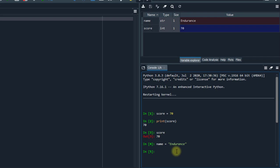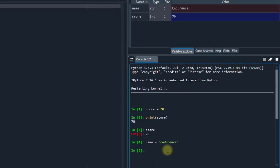So back to our IPython console. Let's retrieve the value stored in the variable name. Name. And endurance. There you have it.